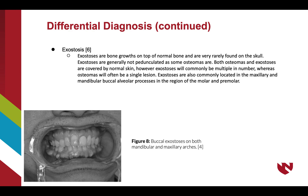The second differential diagnosis associated with osteomas is exostoses, which are bone growths on top of normal bone. Exostoses are generally not pedunculated as some osteomas may be, and both are covered by normal skin; however, exostoses will often be multiple in number whereas osteomas are commonly a single lesion. Exostoses are commonly found in the maxillary and mandibular buccal alveolar processes in the molar and premolar areas. Figure 8 shows numerous buccal exostoses on both arches, with the mandibular being most affected.